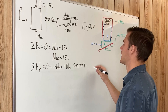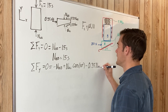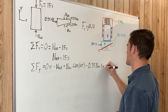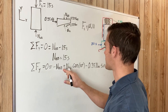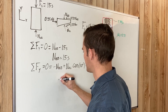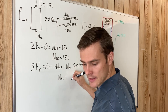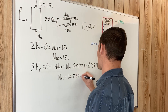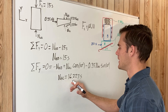The friction force's y-component is in the negative y-direction: minus 0.35·NAC·sine(10°). Solving this equation and substituting NAB equals 15S, we get NAC equals 16.223S.